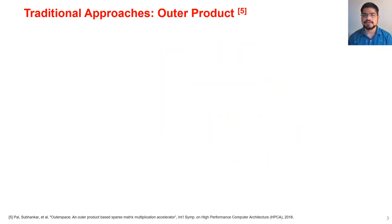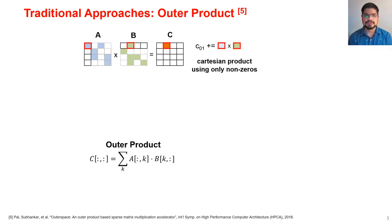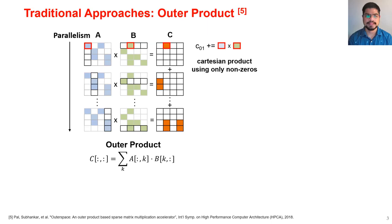Another common approach is the outer product approach. In this approach we take a column of matrix A and a row of matrix B and perform an outer product to produce the entire partial sum matrix for C. In this case, because the column of A has only one non-zero value and the row of B has only one non-zero value, the outer product will result in a partial sum matrix where only one element is non-zero. The parallelism comes from the fact that different outer products and different partial sum matrices can be produced in parallel.